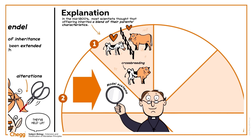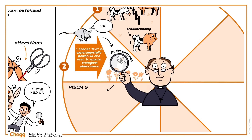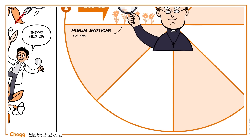Model systems are organisms of a species that are experimentally powerful and used to explain biological phenomena. He started with mice, then experimented with plants and honeybees, before moving on to his most famous work with Pisum sativum, or pea plants.